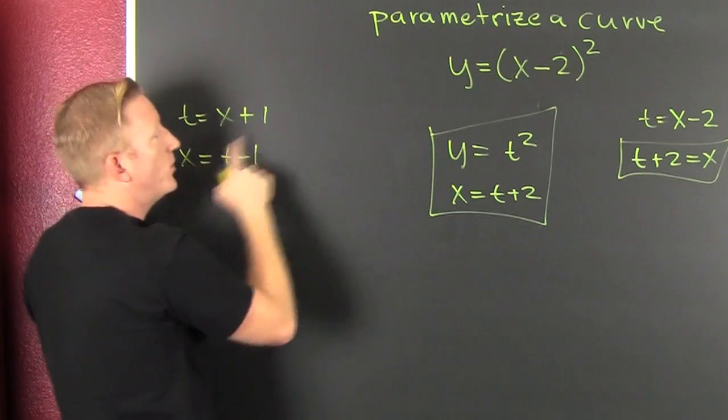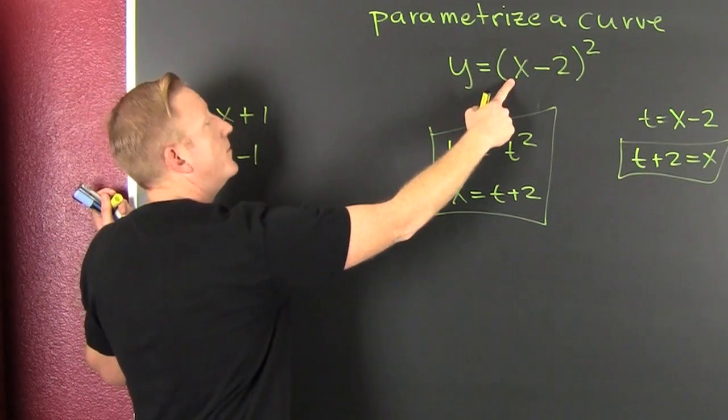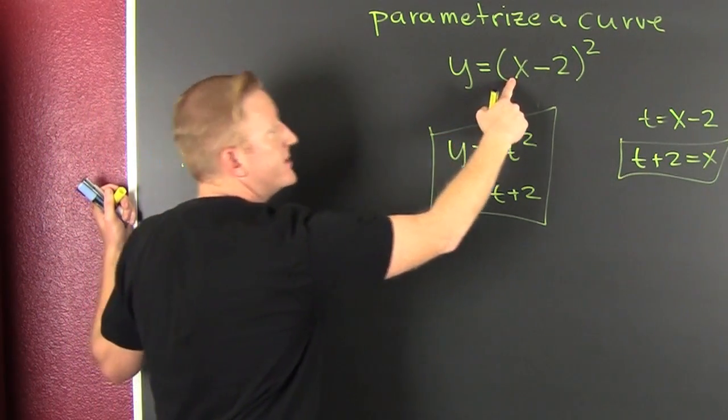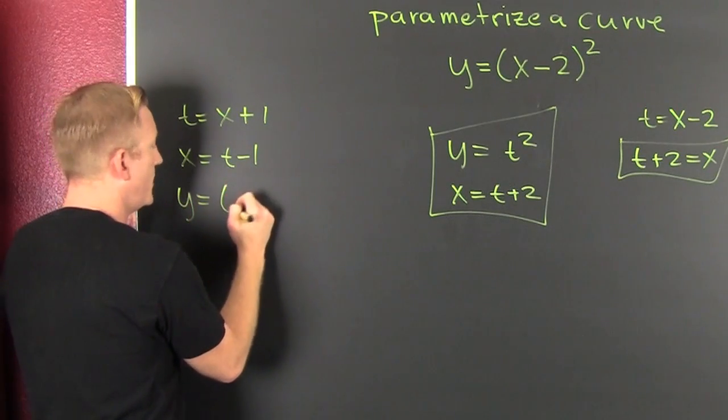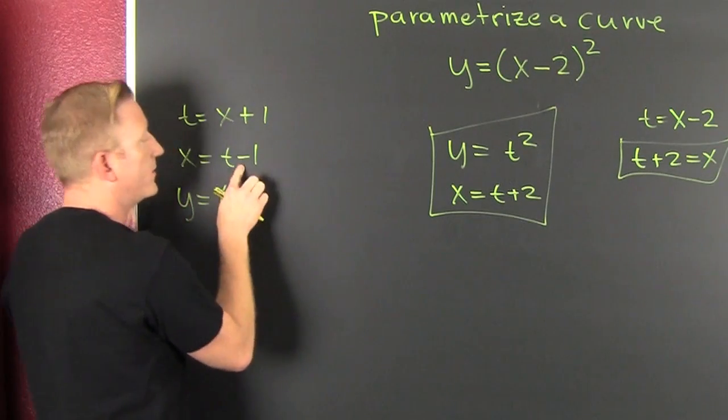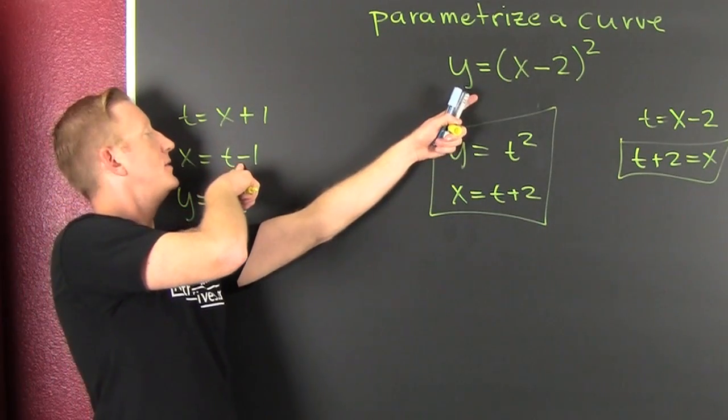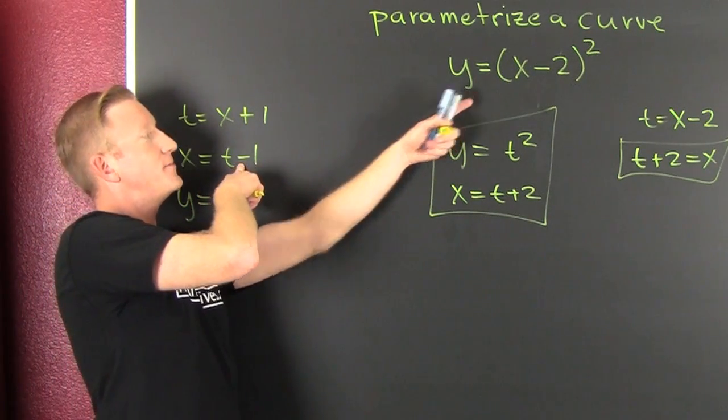So if X is T minus 1, then you put that in there. That's T minus 1 minus 2. That says Y is going to be equal to... Wait. I put that there. Minus 1 minus 2 is minus 3.